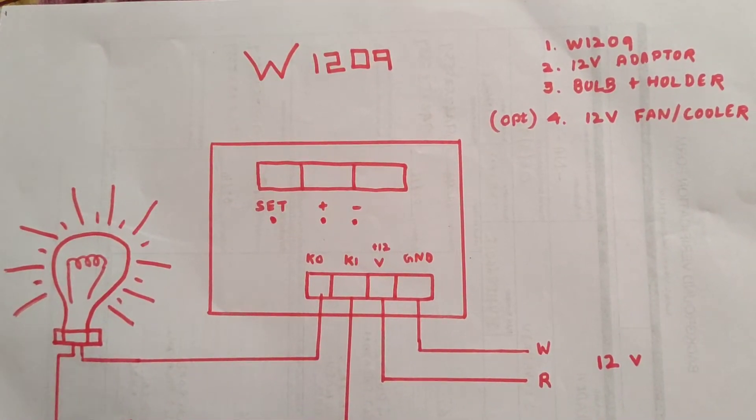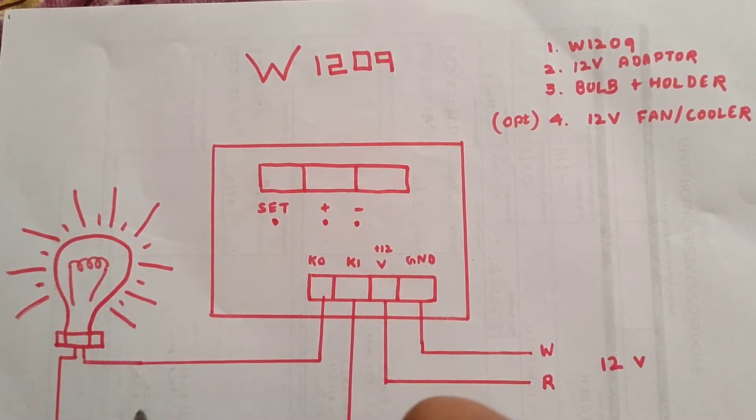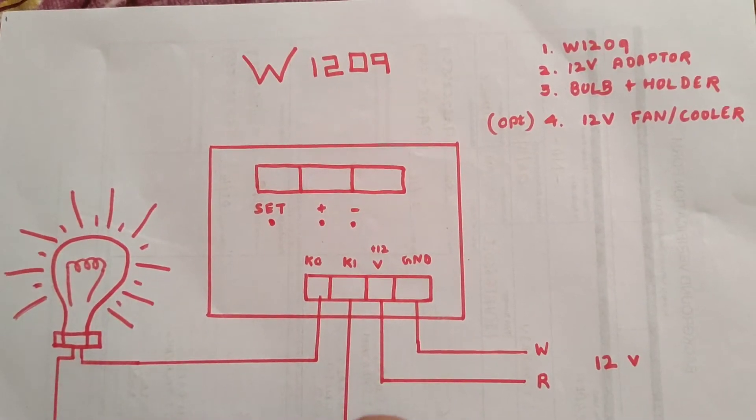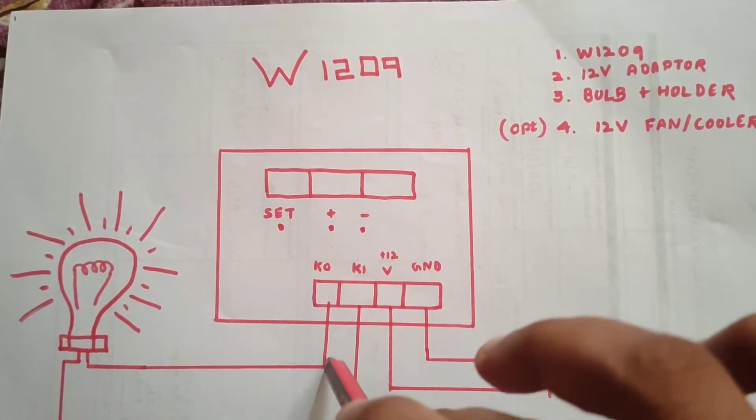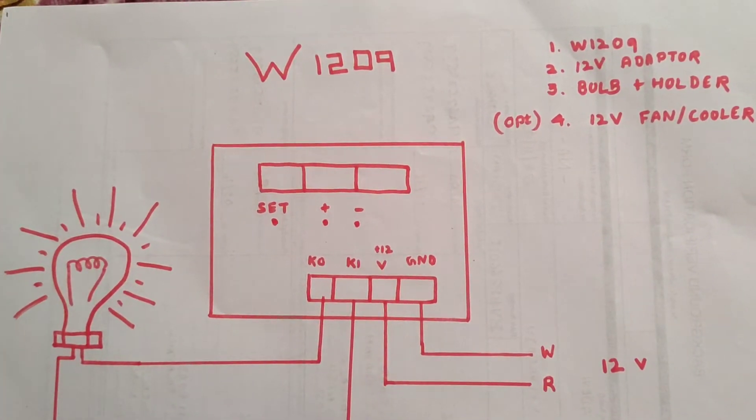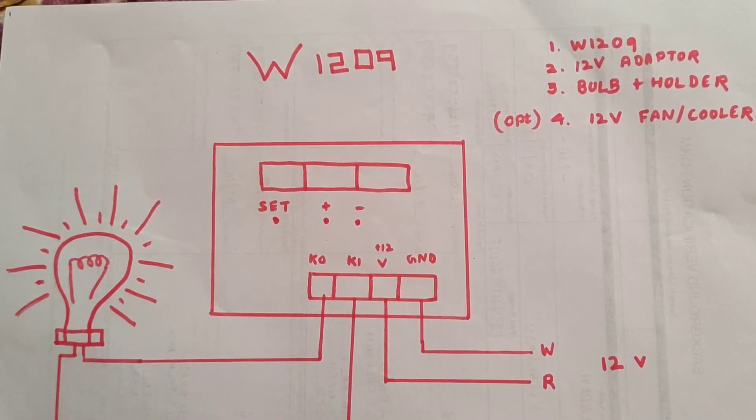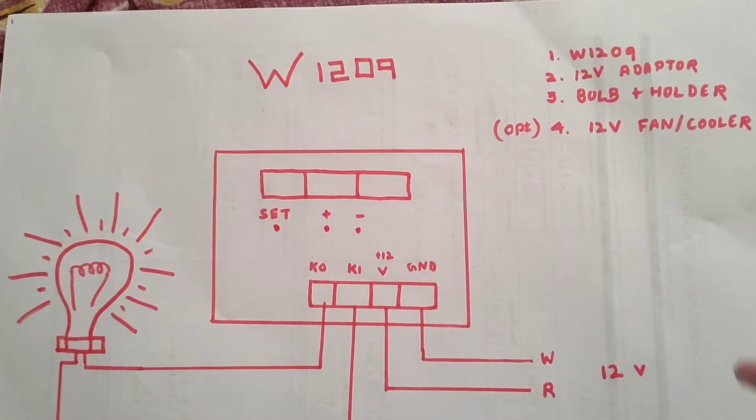The red wire goes to K1. K0 connects to the bulb holder, which has 2 or 3 pins. Connect the wires as shown. The diagram is complete.